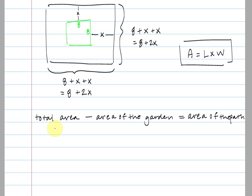So, how can we represent the total area? Well, if area equals length times width, and looking at the total diagram here, the length is 8 plus 2x, and the width is 8 plus 2x. Area being length times width will give us (8 plus 2x) times (8 plus 2x), the length times width.